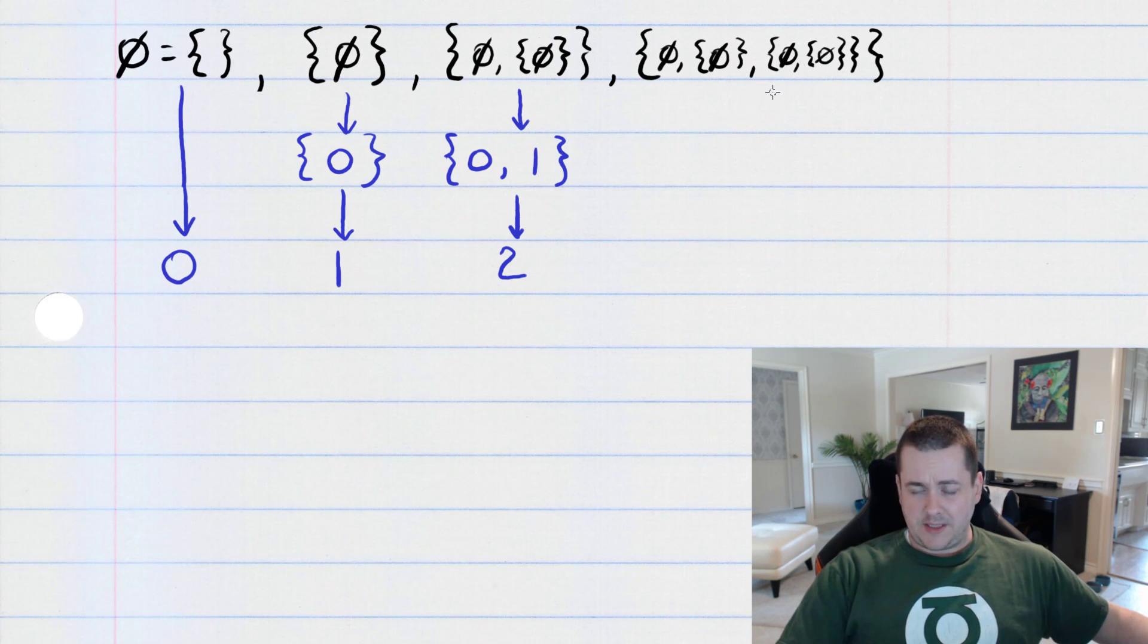Now, over here, this looks even more confusing, so I'm not even going to try to digest that. What you do, though, is you build the set that contains the number zero, the number one, and the number two.